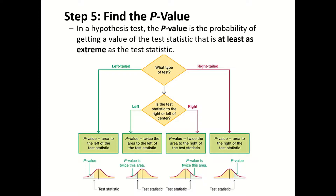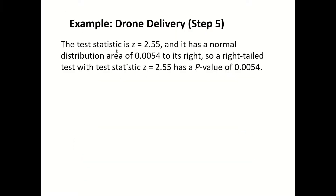For a left-tail test or right-tail test, the p-value is exactly the area of the tail. For example, for the test statistic z equals 2.54 we calculated earlier, the area to its right — the p-value — is 0.0054. To calculate the p-value, you can use the z-score chart, since we're dealing with z-scores in this problem, or you can use technology.